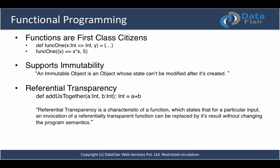Referential transparency is a characteristic of a function which states that for a particular input, an invocation of a referentially transparent function can be replaced by its result without changing the program semantics. Using our add function: `val expected5 = addUsTogether(2, 3)` — we can assume the result will be 5 after adding 2 and 3. This can be written as `val expected5 = 5` without affecting other parts of the program semantically. If you support functional programming, you would also support immutable data structures and referentially transparent methods.